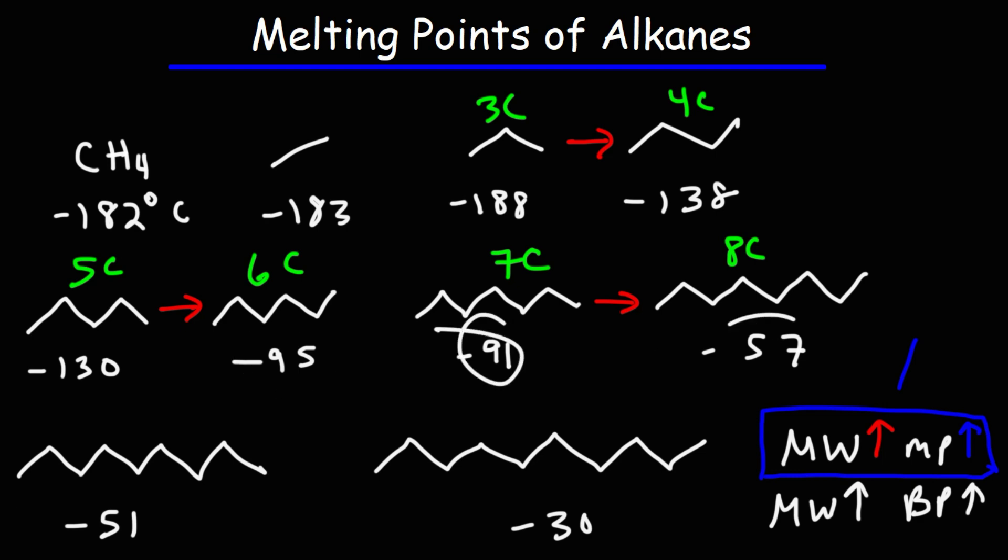But here, from negative 91 to negative 57, that's an increase of 34 degrees Celsius. So let's put some numbers to this. So this was an increase of 50. This was an increase of 45. And this is an increase of 34.